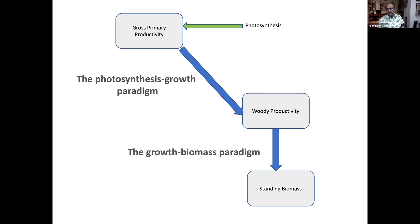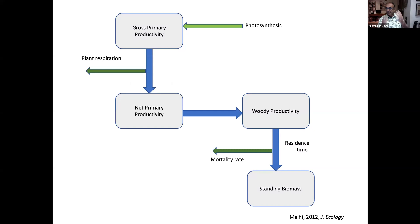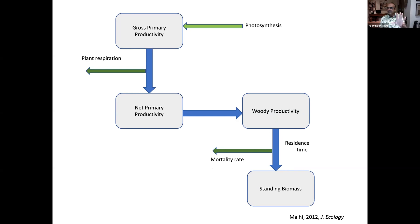If we assume a quasi-linear relationship between productivity and woody growth — a photosynthesis-growth paradigm — then photosynthesis is linked to woody growth. And if we think that woody growth rates are linked to biomass, that's the growth-biomass paradigm. We know that gross primary productivity links to net primary productivity, which is the total rate of biomass creation in a forest in leaves, roots, or woody material. A fraction of that NPP goes to woody production. The relationship between woody production and standing biomass is determined by the rate of production, but as much or even more so by the rate of mortality — how long trees live, their residence time.